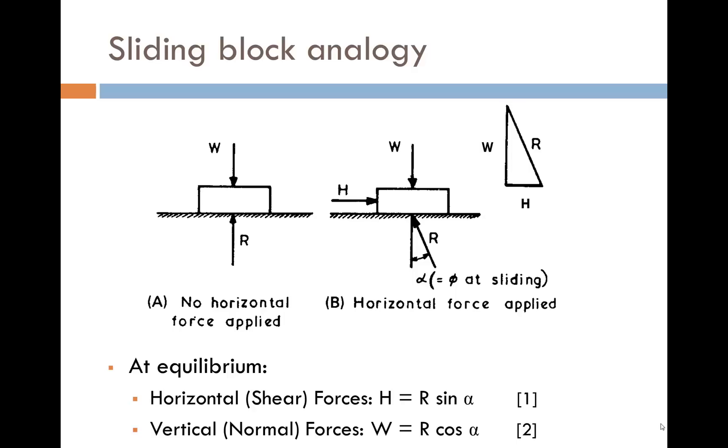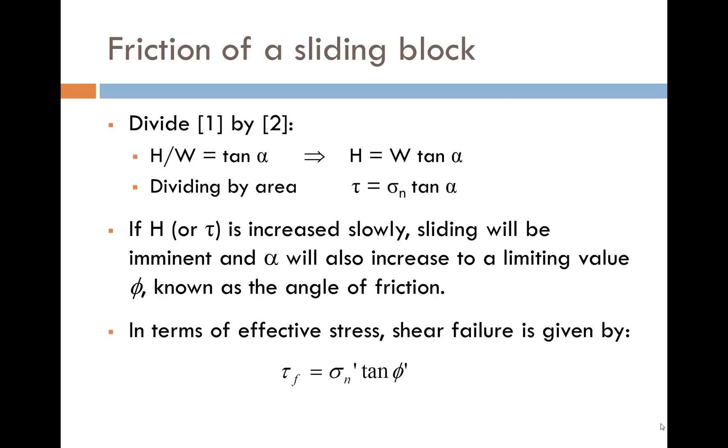Once the shear force H is applied, the force R becomes inclined at an angle alpha to the vertical. Resolving the forces horizontally we get that H is equal to R sin alpha, and resolving the forces vertically we get that W is equal to R cos alpha. Dividing one equation by the other we get that H over W is equal to tan alpha, or H is equal to W tan alpha.